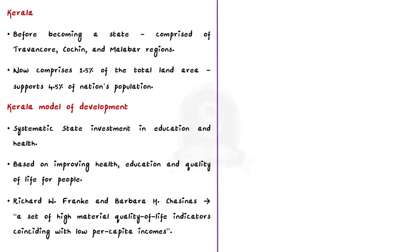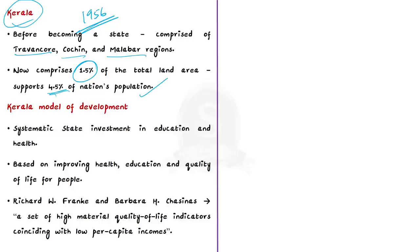Modern Kerala formally emerged as a constituent state of the Indian Union in November 1956. Before becoming a state, Kerala comprised three regions: Travancore, Cochin, and Malabar. After reorganization, Kerala occupies a narrow strip of land comprising 1.5 percent of the total land area in the country and supports 4.5 percent of the nation's population. Kerala is called 'God's Own Country' as it is one of the world's most popular tourist destinations due to its natural beauty.